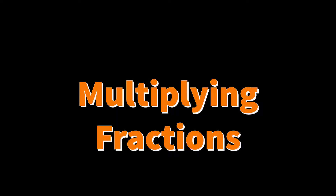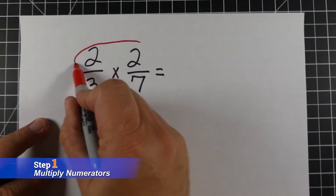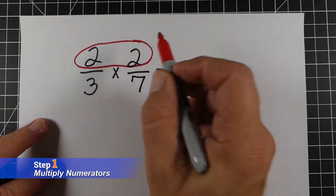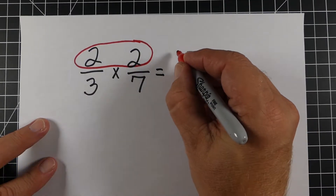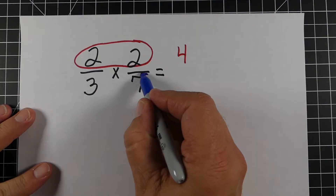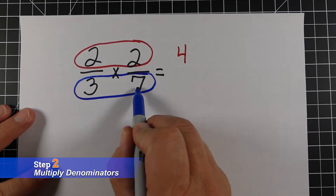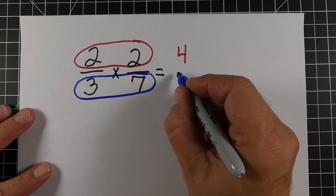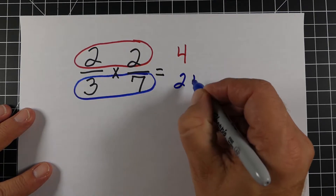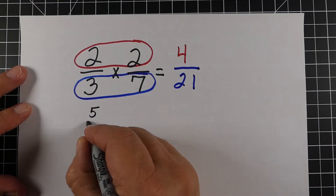Multiplying fractions is relatively easy to do. Here's an example of two-thirds times two-sevenths. The first step is just multiply the two numerators — two times two is four. Next, we multiply the two denominators — three times seven is going to be 21. And that's pretty much it. You just multiply the numerators, multiply the denominators, and that's going to be your answer.